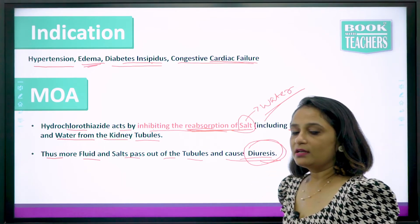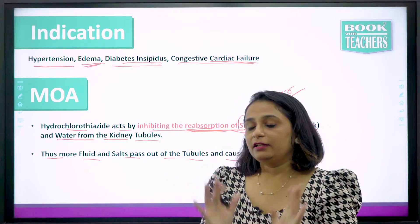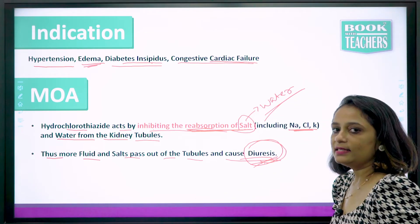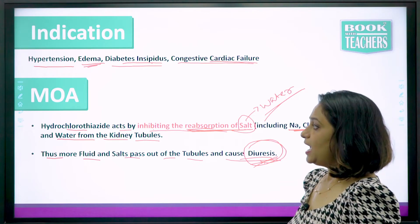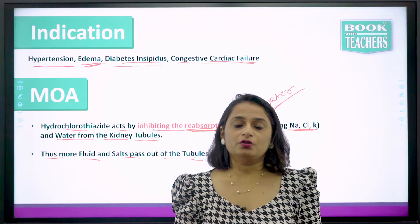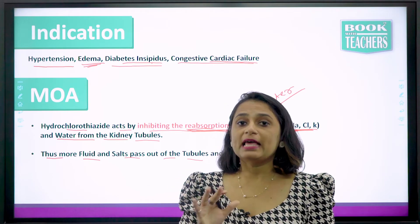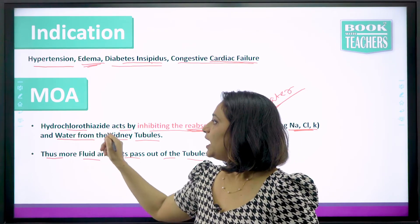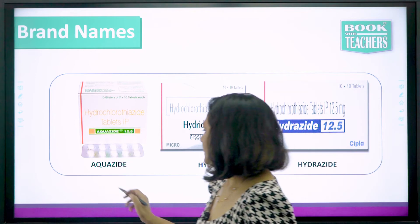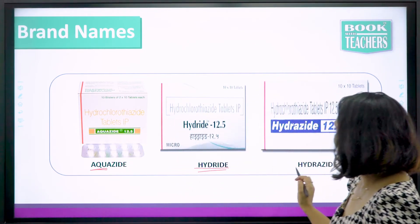If the water and salt are not going to be reabsorbed by the kidney, they are going to be excreted as waste in the form of urine. So diuresis is caused by hydrochlorothiazide. The brand names available include Aquazide, Hydride, and Hydrazide — notice they all start with 'hydra,' indicating they belong to the class of diuretics.